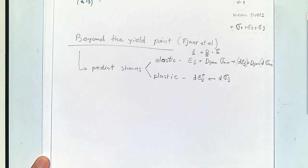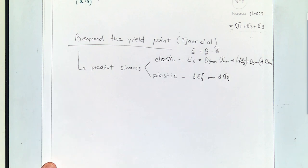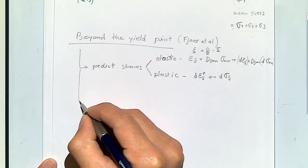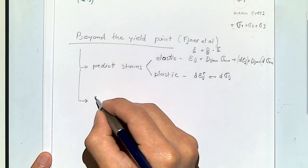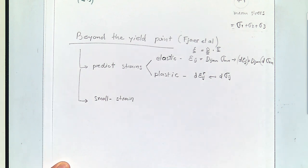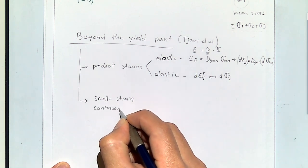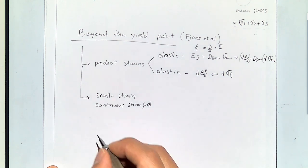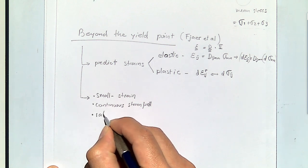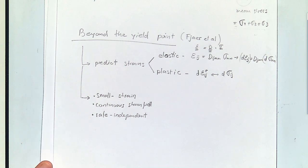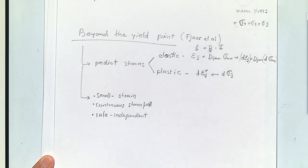There are going to be five things we need to work with in order to make these predictions, and we're going to limit the theory to some simplifying assumptions. First, this will be small strain. Second, it will be a continuous strain field, which means I cannot have a fracture in this type of model. Third, we are going to assume that this is rate independent — meaning it doesn't matter how much time we take to load the rock; the response will be the same.